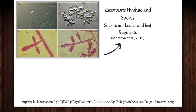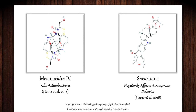While Escovopsis begins to take over the fungal garden, it releases secondary metabolites in the form of virulence factors Melanicidin-4 and Sherinine to protect itself from the antifungal agents produced by the Acromyrmex ants and the cuticular actinobacteria. Melanicidin-4 kills off the cuticular bacteria, while Sherinine builds up in the tissues of the Acromyrmex fungal garden workers, negatively altering their behavior by reducing their efficiency in cleaning leaf fragments and the fungal gardens of Escovopsis hyphal growth, thereby promoting the parasite's growth and increasing the chances of an Escovopsis outbreak spreading throughout the colony.